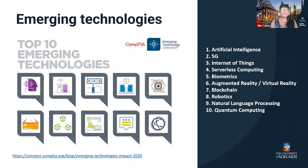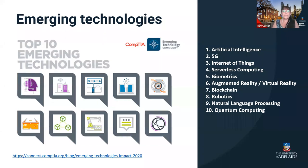Emerging technologies — just what are these? You may have heard about them over the past few years; some are still emerging, some are starting to be rolled out on mass. The Computer Technology Industry Association has outlined ten, including artificial intelligence, 5G, the internet of things, serverless computing, biometrics, augmented and virtual reality, blockchain, robotics, natural language processing, and quantum computing. You'll hear more about these as the months and years roll on and they'll become part of our everyday lives.